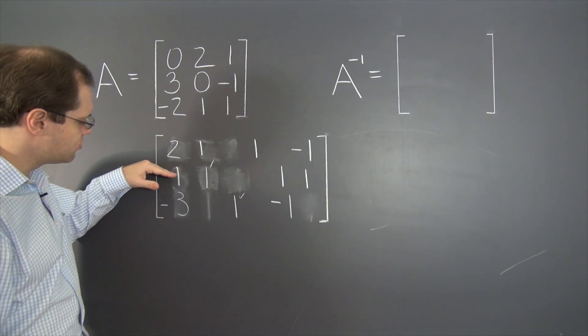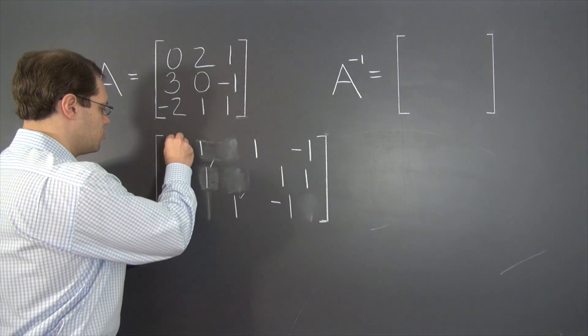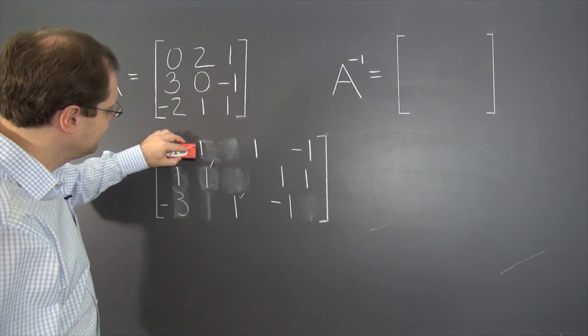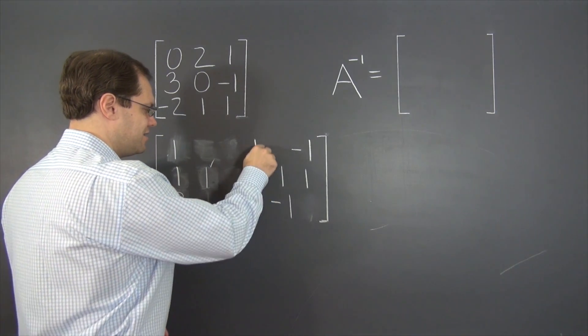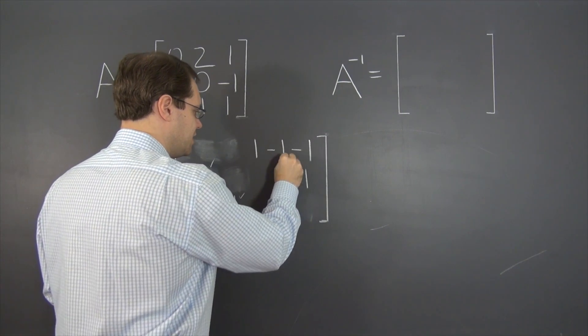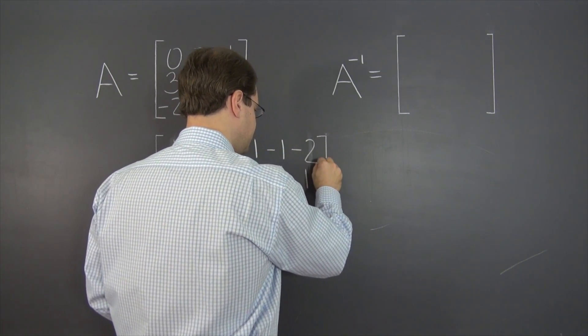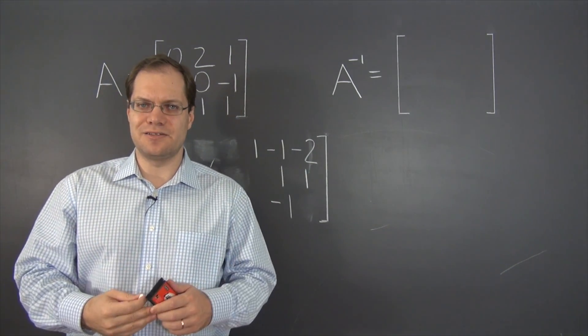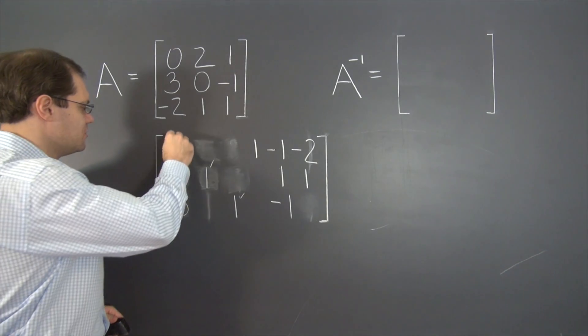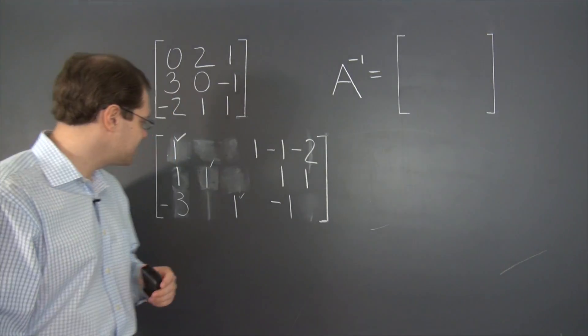And you do that by subtracting row two from row one. Subtracting row two from row one puts a one here, minus one and minus two. And we're done with the second group of operations in Gaussian elimination and we're down to the last column, which would have been the first column, but now it's the last column.